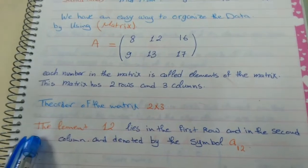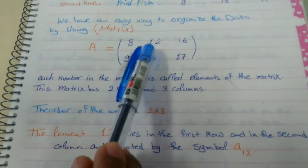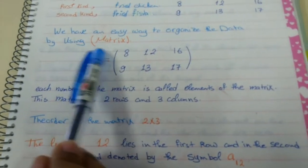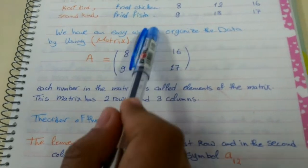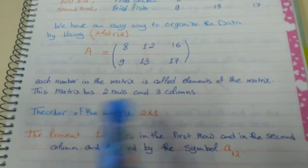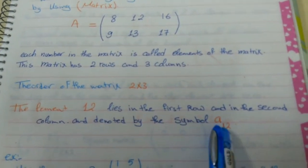If I ask you about the element 12, it lives in the first row and the second column. So we say A 1, 2.